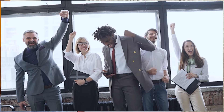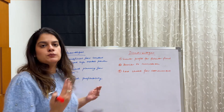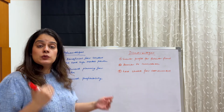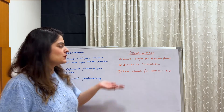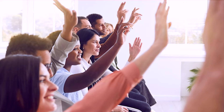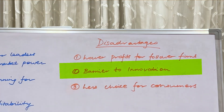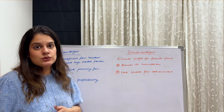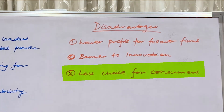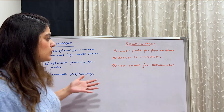Coming to the advantages and disadvantages: advantages will be more to the leader and disadvantages to the followers. Under advantages: it is beneficial for leaders who have high market power, as they have the steering wheel in their hands. They have efficient planning for production because they know people are going to react. And of course, enhanced profitability for them as leaders. Under disadvantages: there are lower profits for follower firms, which is a big disadvantage. There is a barrier to innovation, because followers are kind of blindly following the leader and not innovating. And lastly, less choice for consumers, since followers are copying the leader and consumers find everything just the same.